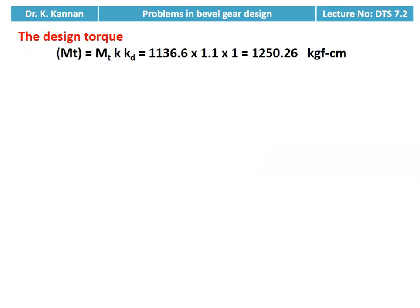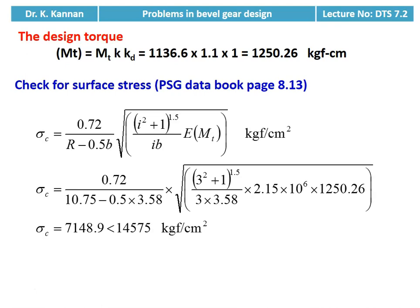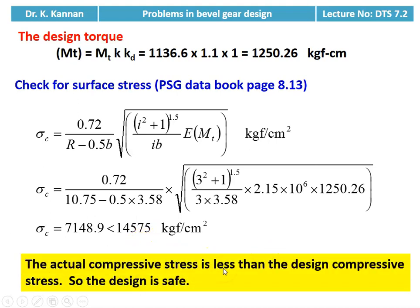We recalculate the design torque for checking: MT(design) = MT × KKD = 1136.6 × 1.1 × 1 = 1250.26 kilogram force centimeter. Now we check for surface stress. Equation from page 8.13: σC = 0.72 / (R − 0.5b) × √[(i² + 1)^1.5 / (i × b × E × MT(design))]. Substituting numerical values, σC = 7148.9 kgf/cm², which is less than the design surface stress of 14,575 kgf/cm². The actual compressive stress is less than the design compressive stress, so the design is safe.